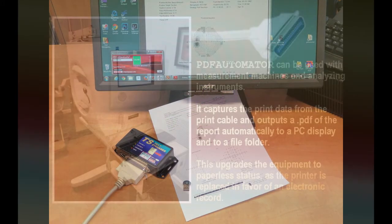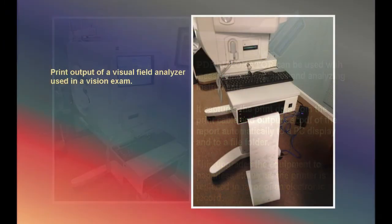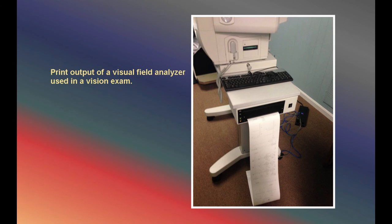Demonstration of PDF Automator. PDF Automator can be used with measurement machines and analyzing instruments. It captures the print data from the print cable and outputs a PDF of the report automatically to a PC display and to a file folder. This upgrades the equipment to paperless status as the printer is replaced in favor of an electronic record. Here is the print output of a visual field analyzer used in a vision exam.